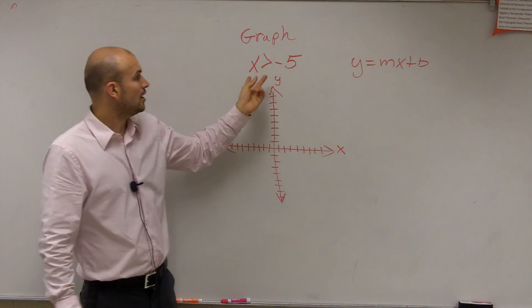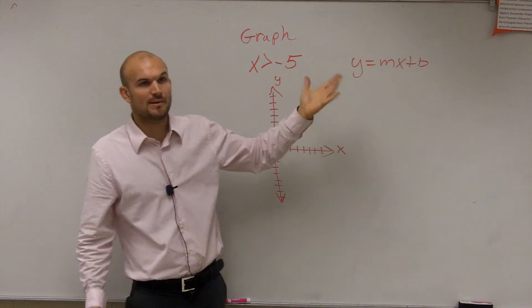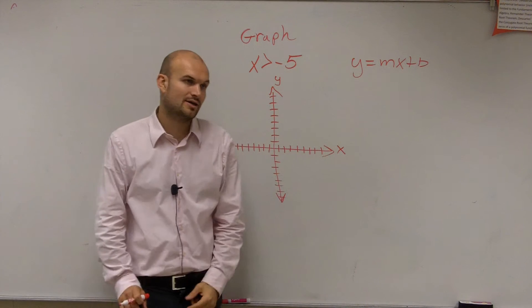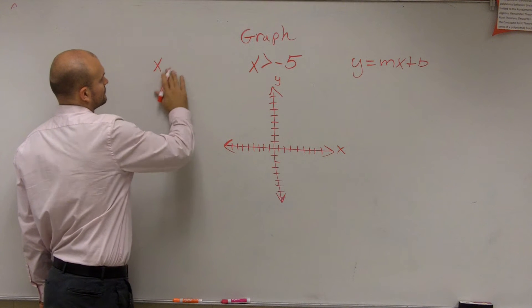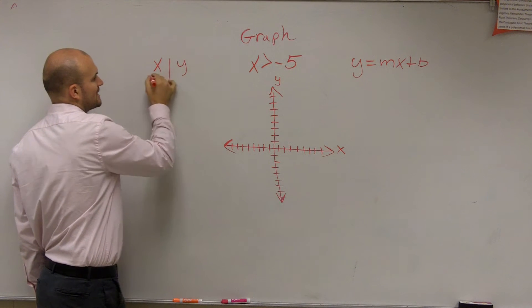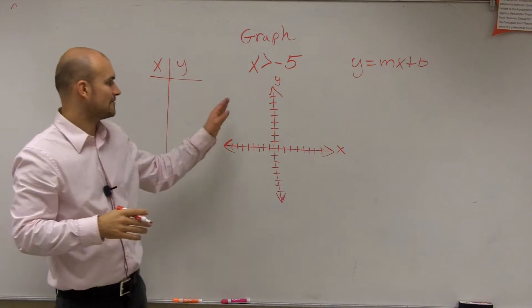So this is not going to really help me out. I don't have a y, so I can't really write in that format, so I can't determine what the slope or the y-intercept is. Then the next thing is, let's do a table of values. So it says x is greater than negative 5.